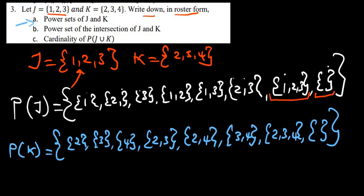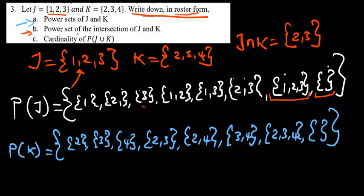So we've done part A, where they're saying power sets of J and K. Now part B — they're saying write down in roster form the power set of the intersection of J and K. So we are looking for the members that will be in both J and K. We can first find J intersection K. So J intersection K gives us {2, 3}.